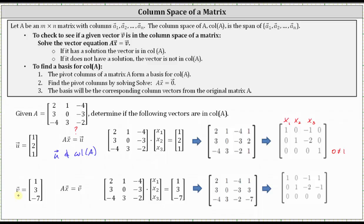To check whether vector v is in the column space of A, we need to see if we have a solution to A times vector x equals vector v. We set up the augmented matrix and write it in reduced row echelon form, labeling columns x1, x2, x3. Notice in row three we have a row of zeros, which indicates an infinite number of solutions. Since there is at least one solution, vector v is in the column space of A.